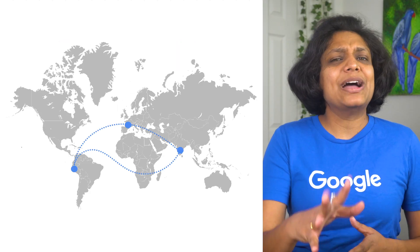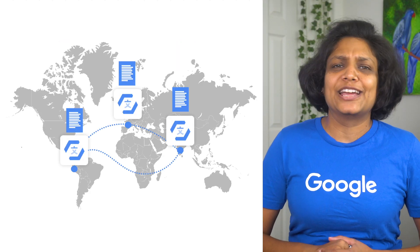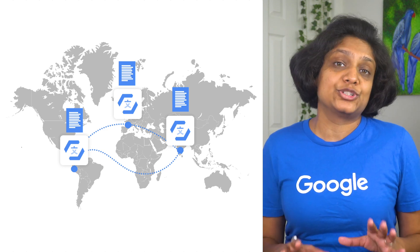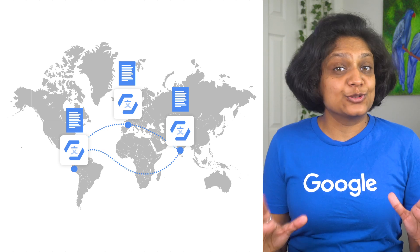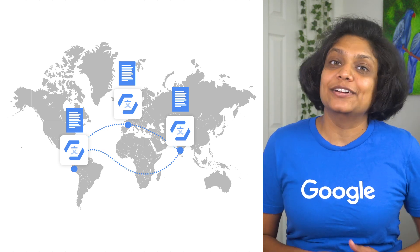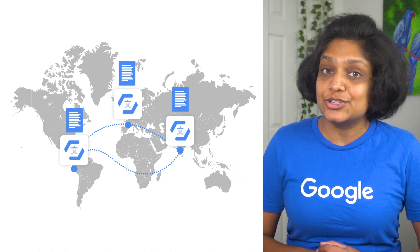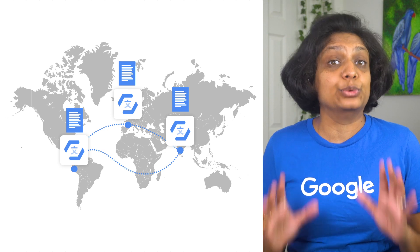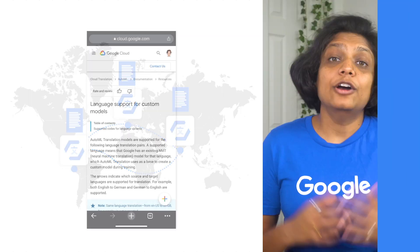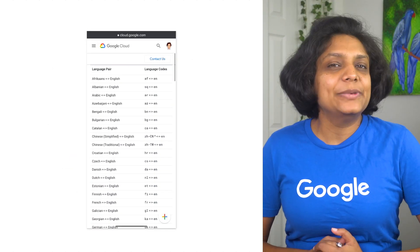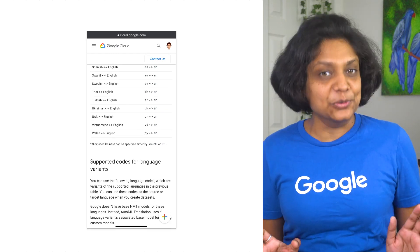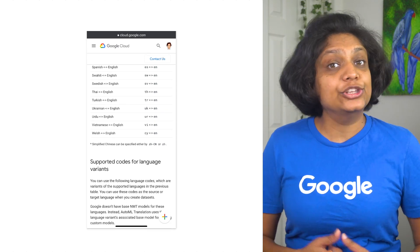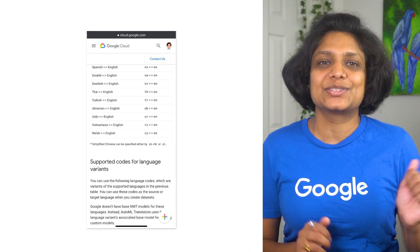To understand this further, let's take another example. Imagine you run a financial reporting service that has an opportunity to expand to Peru, India, and France. Those markets require that your time-sensitive financial documents are translated in real time. AutoML Translation can help you automate the translation job for over 100 language pairs in a scalable way, allowing you to enter those newer markets quickly.